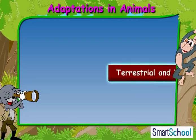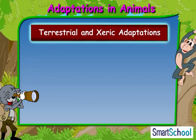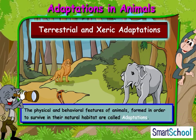Now let us learn about terrestrial and xeric adaptations. Before going any further, let us learn about adaptations of animals in context of their habitat. The physical and behavioral features of animals developed in order to survive in their natural habitat are called adaptations.